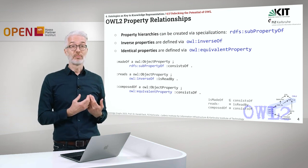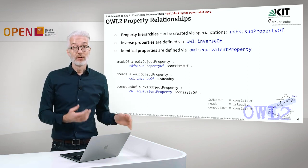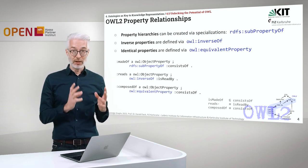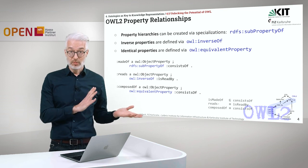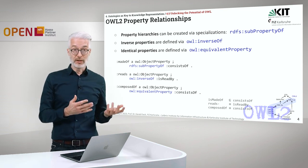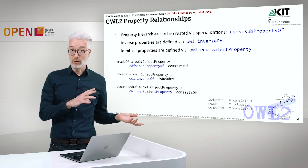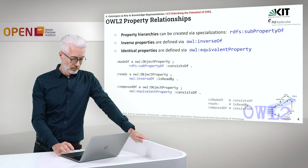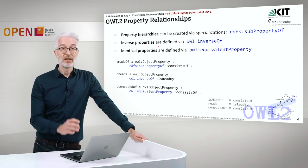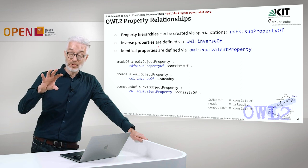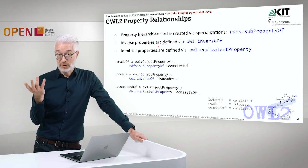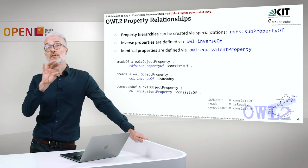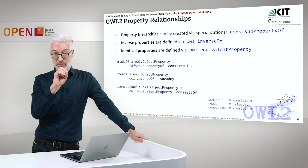The next thing we are going to introduce are property relationships. You know already about property hierarchies — we have already introduced this with RDFS. RDFS subproperty you know already; it does not introduce any new semantics and does not hurt OWL, so therefore we are simply reusing it to declare subproperties. We also have inverse properties to define a property to be the inverse of an already existing property, or we can also say a property is equivalent — exactly the same as another property.